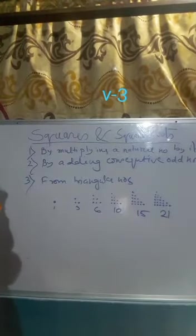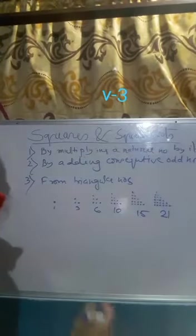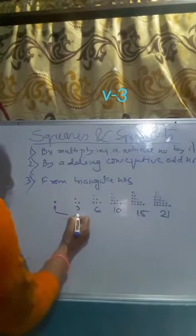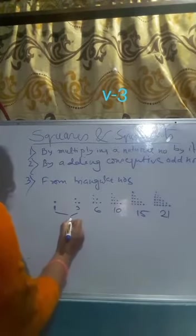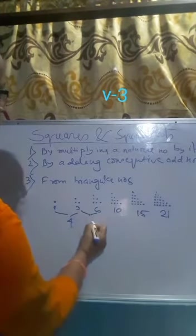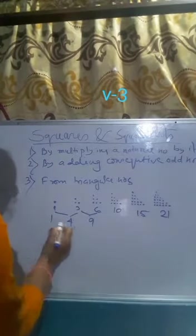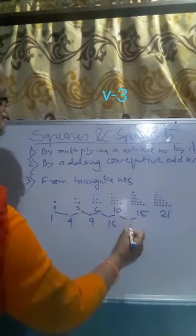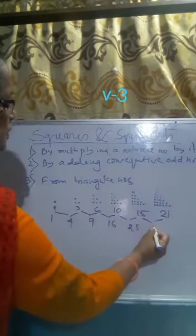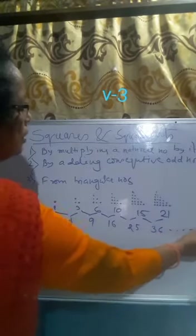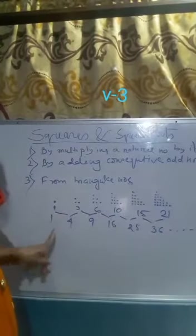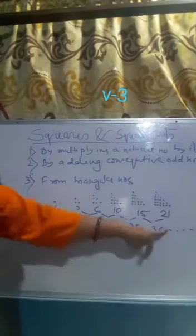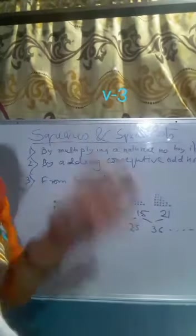From these triangular numbers, we can also find the square numbers. The first natural number, which is 1, is the first square number. Adding consecutive triangular numbers gives the next square numbers. In this way, we get the first, second, third, fourth, fifth, and sixth square numbers. This pattern can be extended to get all square numbers.